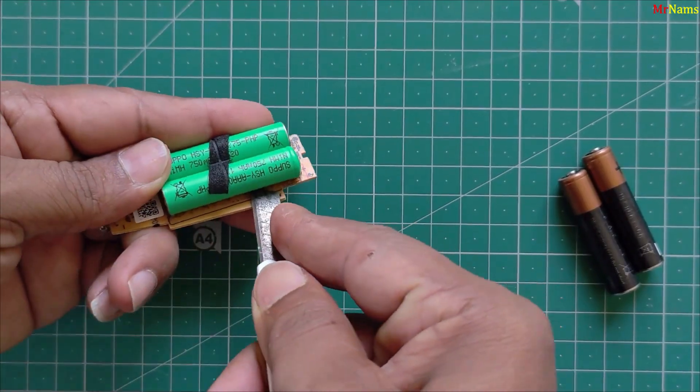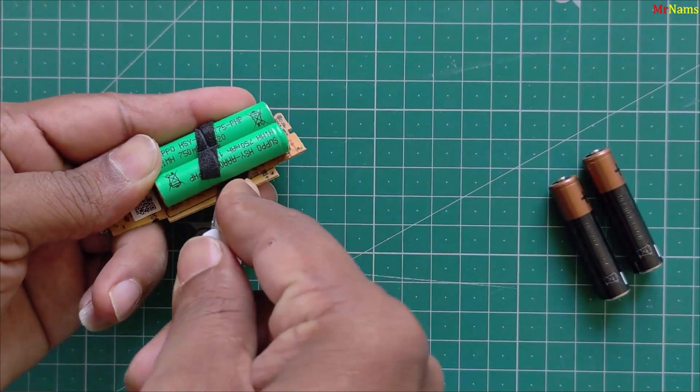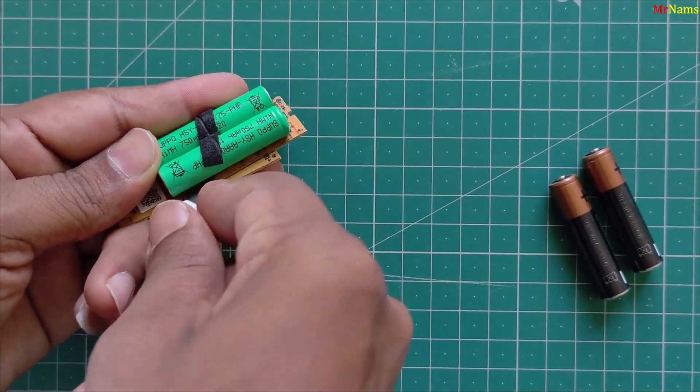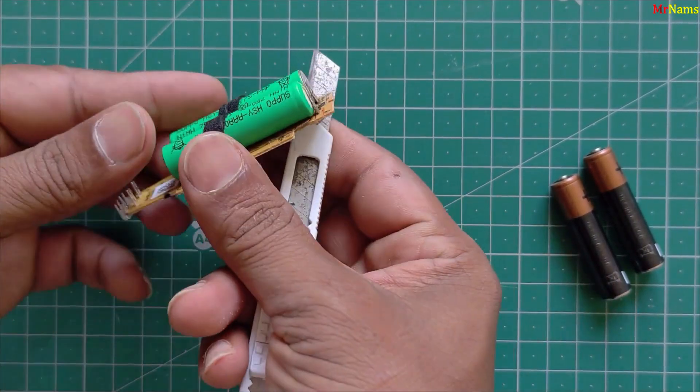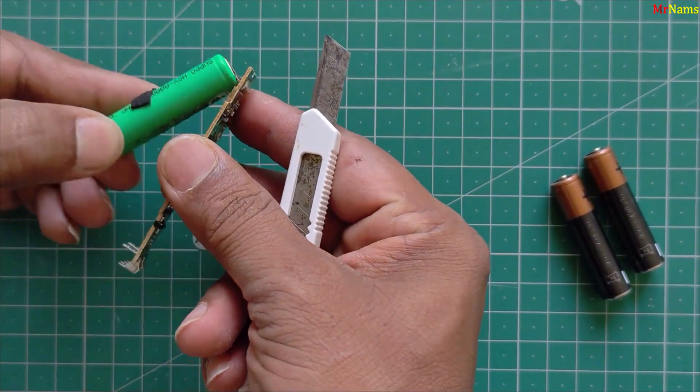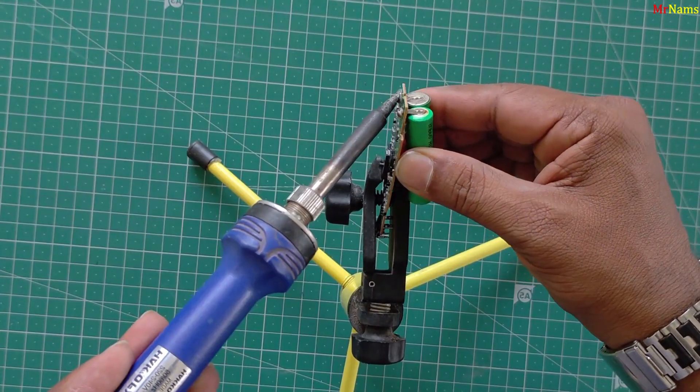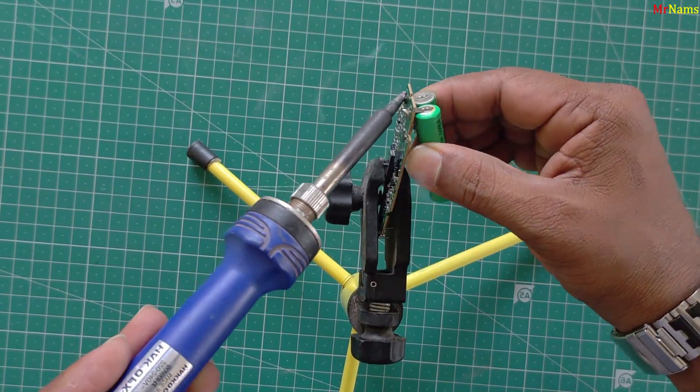Step 3. Remove the old batteries. Remove the glue securing the batteries to the case. Desolder the old rechargeable cells from the PCB.